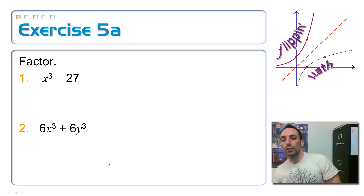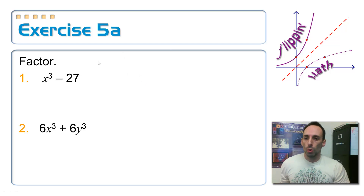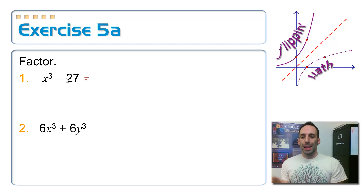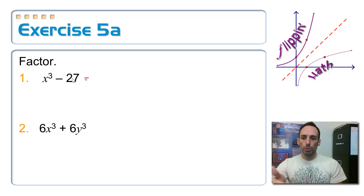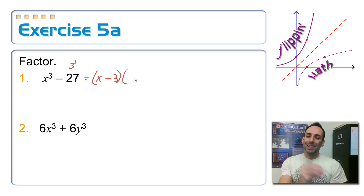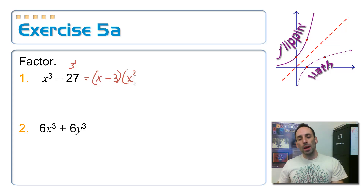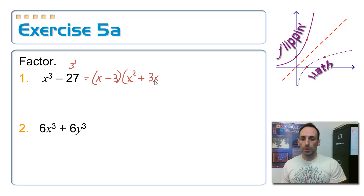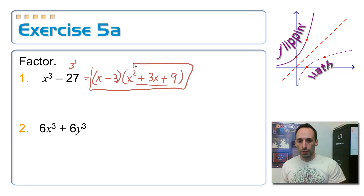Let's try to factor a couple of these. On the first one, is there a greatest common factor? No, nothing in common. It's not a difference of squares, so is it a difference of cubes? Yes — x cubed is a perfect cube, and 27 is 3 to the third power. So the first factor is the cube root of both terms with the minus sign: x minus 3. For the second factor, square the x to get x squared; since the sign is minus, the next is plus; multiply x times 3 to get 3x; and the last term is 3 squared, which is 9. This second factor is prime, so it's done.